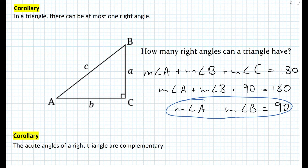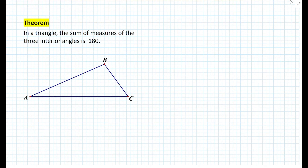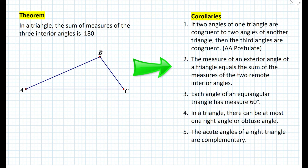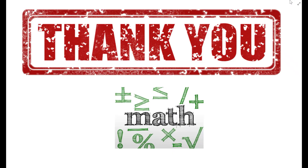Now that we have developed all these corollaries, let's summarize them. From the theorem that in a triangle the sum of the measures of the three interior angles is 180, the corollaries are: first, if two angles of one triangle are congruent to two angles of another triangle, then the third angles are congruent — the AA postulate; second, the measure of an exterior angle of a triangle equals the sum of the measures of the two remote interior angles; third, each angle of an equiangular triangle has measure 60 degrees; fourth, in a triangle there can be at most one right angle or obtuse angle; and fifth, the acute angles of a right triangle are complementary. Thank you for watching, and have a great day.